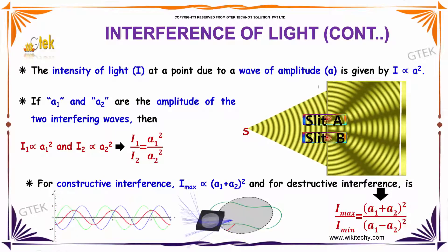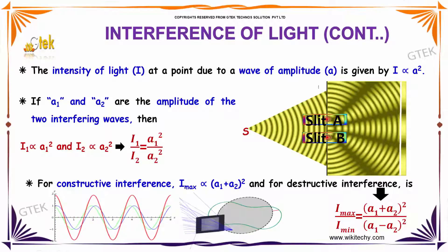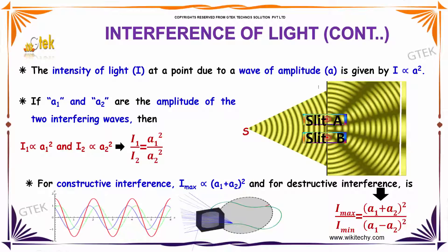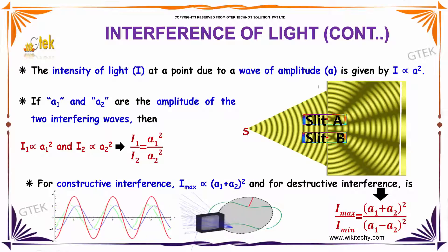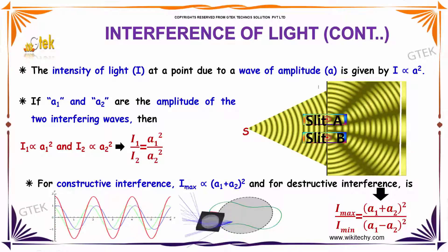For constructive interference, Imax is directly proportional to (A₁ + A₂) whole square. And for destructive interference, Imax divided by Imin is equal to (A₁ + A₂) whole square divided by (A₁ - A₂) whole square.